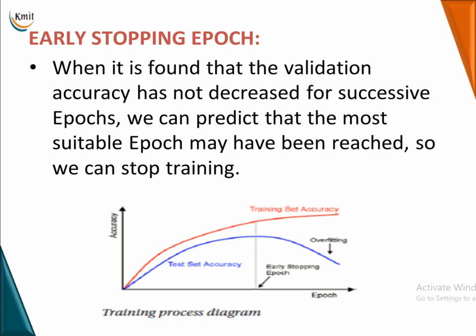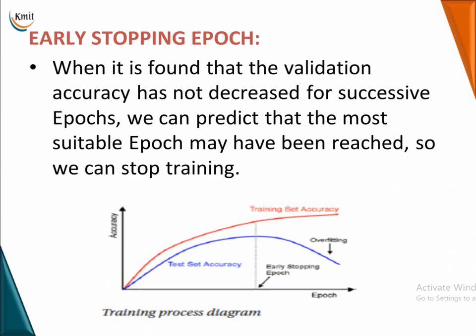When it is found that the validation accuracy has not improved for a successive number of epochs, you can predict that the most suitable epoch may have been reached and stop training. That is the key point about when you should stop training a model. This is the first solution towards overfitting, and we are going to see the next solutions in more detail in our later class.